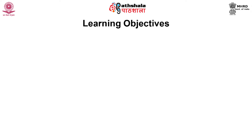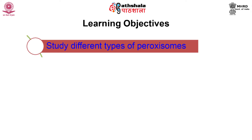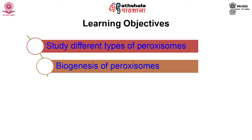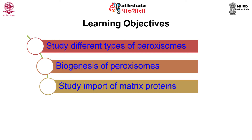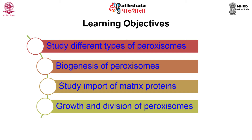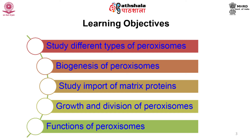Peroxisomes are involved in two fundamental processes: lipid metabolism and defense systems for in-situ scavenging of peroxides and reactive oxygen species. The learning objectives for the session are to study different types of peroxisomes, biogenesis of peroxisomes, import of matrix proteins, how peroxisomes grow and divide, and finally the functions of peroxisomes.